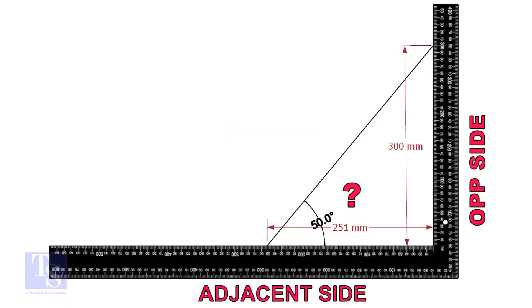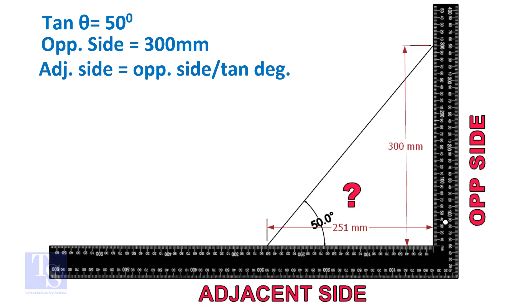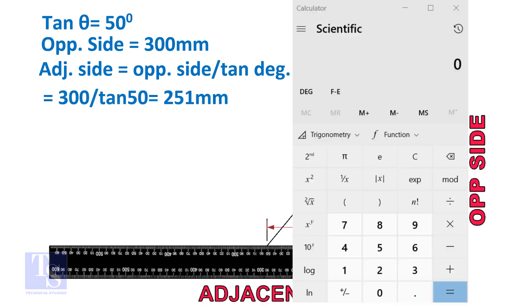Let us learn some TAN rule calculation. TAN degree is equal to opposite side divided by adjacent side. For this formula, we know only the TAN degree. Let us assume the opposite side is 300 mm. You can take any suitable dimension, as required. Adjacent side is equal to 300 divided by TAN 50 degree. Let us calculate.